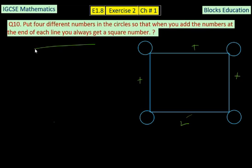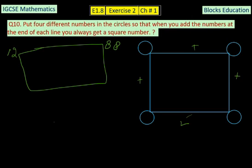But I can give you the answer. One of the possibilities could be 12, 88, 24, and 201. Now you can add all these two numbers: 12 and 24, 12 and 88, 88 plus 201, 24 and 201. They're all square numbers.